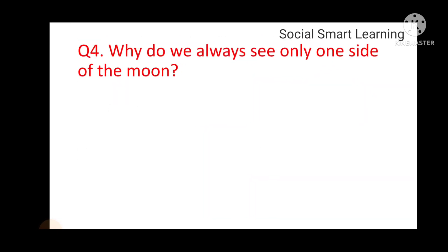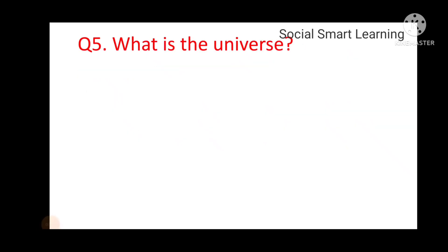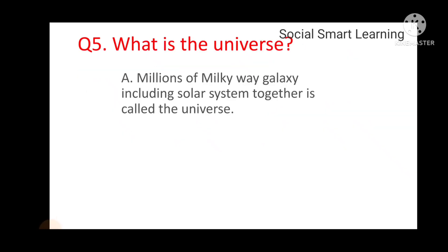Next question: Why do we always see only one side of the moon? The moon moves around the earth and also spins on its own, so we can always see only one side of the moon. Question 5: What is the universe? Millions of Milky Way galaxies, including the solar system, together are called the universe.